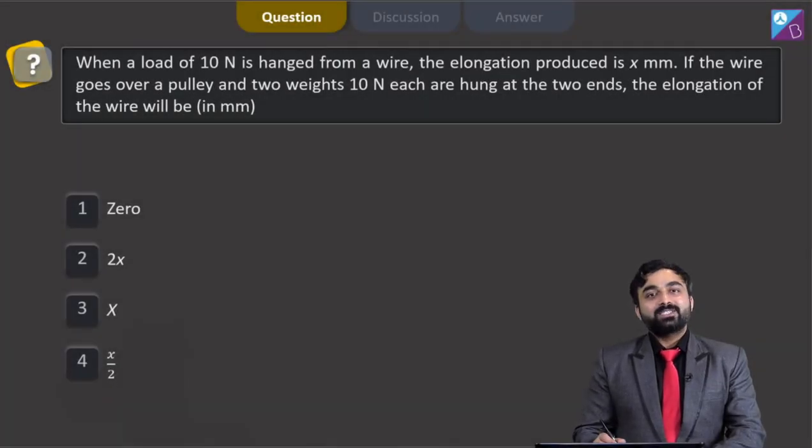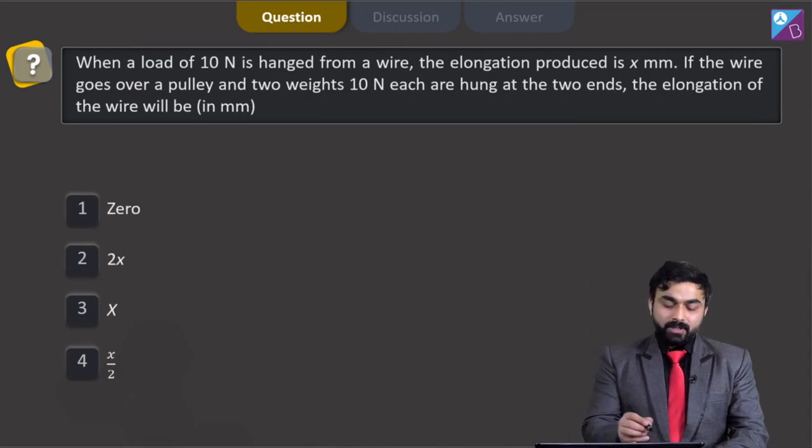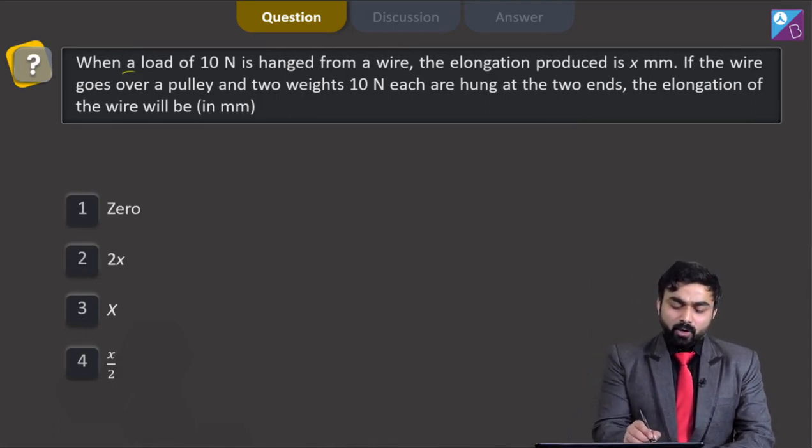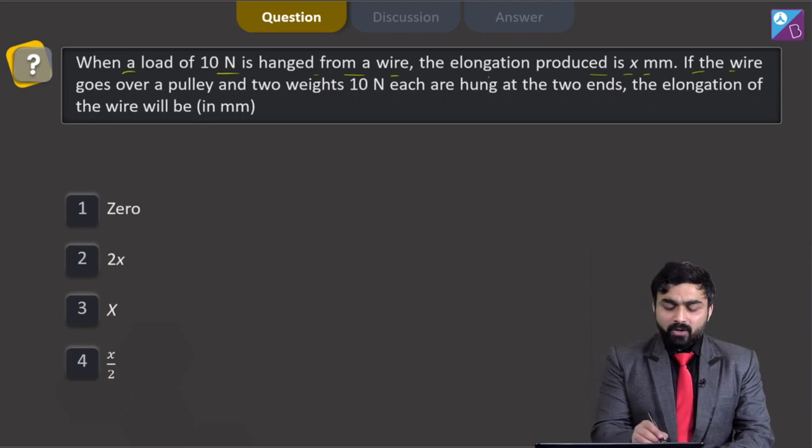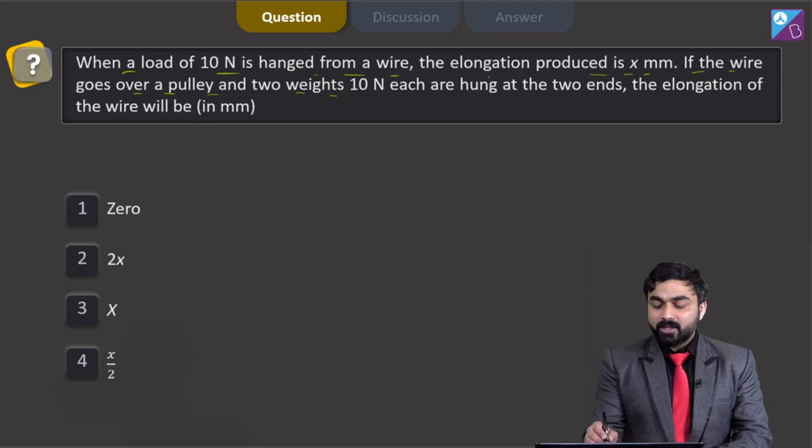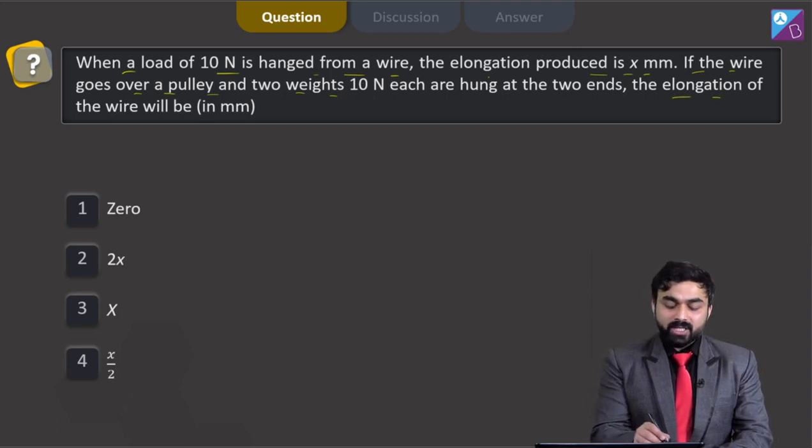Hello dear students, let's check out this particular question. When a load of 10 Newton is hanged from a wire, the elongation produced is x mm. If the wire goes over a pulley and two weights 10 Newton each are hung at the two ends, the elongation of the wire will be what?